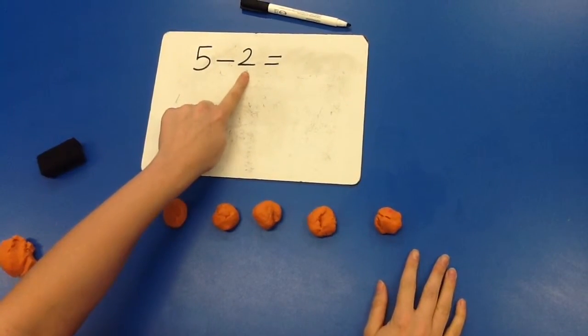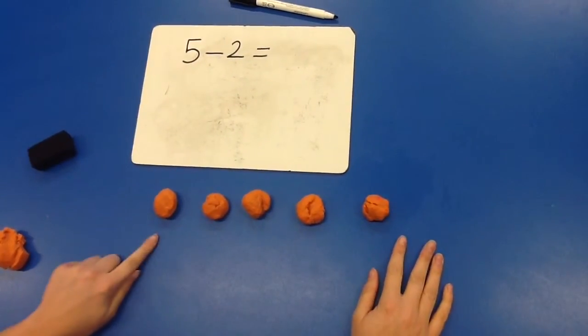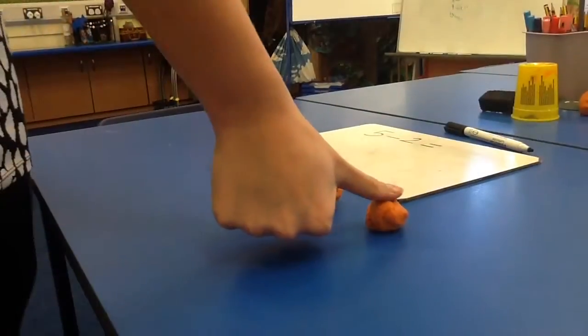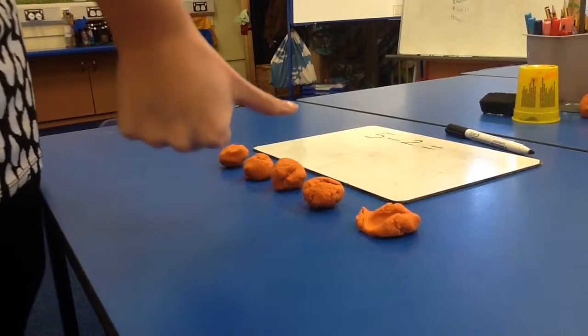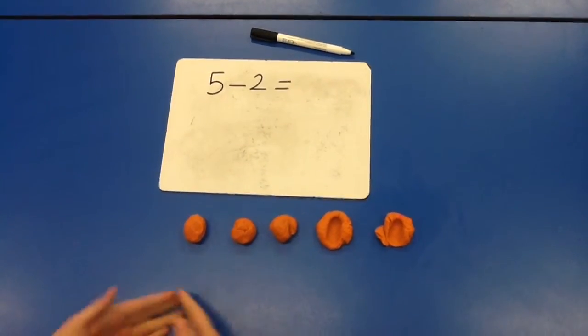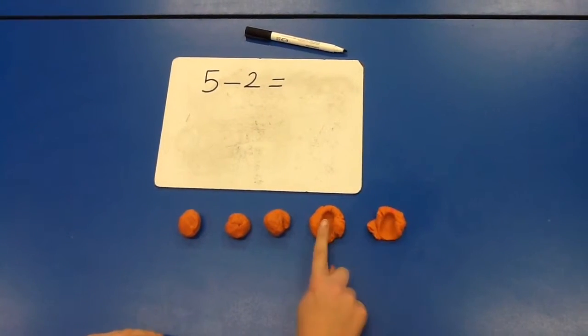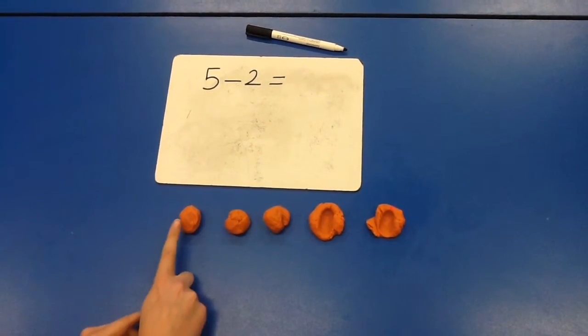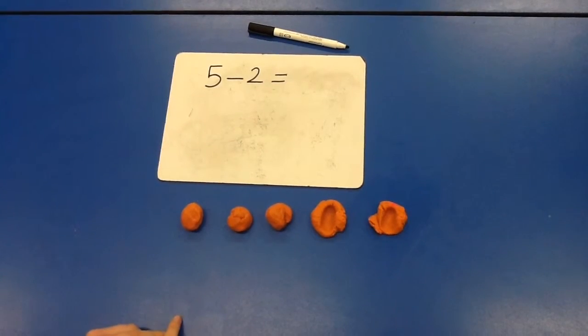Remember we are taking away 2 from our 5 balls. Squish 1, 2. As you can see we have squished 2 balls away. How many left? 1, 2, 3.